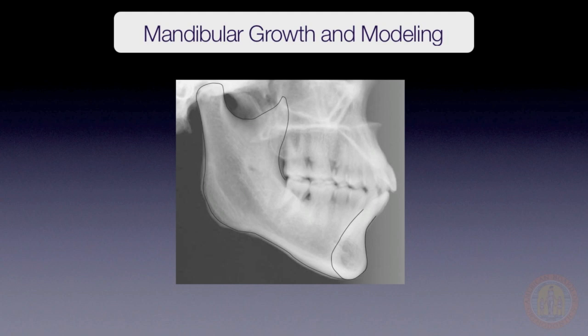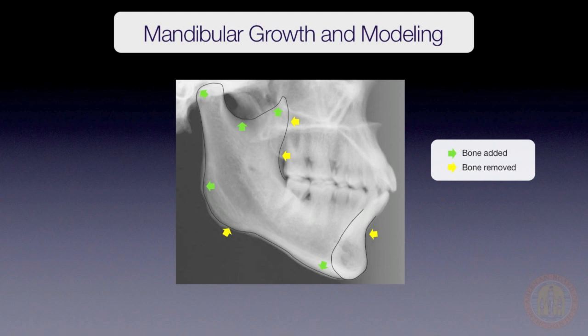Due to the remodeling that occurs, mandibular growth and treatment effects cannot be evaluated by superimposing on the mandibular outline. This is why superimpositions on the lower border cannot be relied upon — bone is either being added or removed. Except for the periosteal contour of the chin just below Pogonion, the entire outline changes over time during growth and treatment.